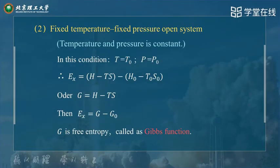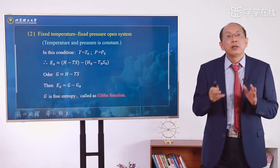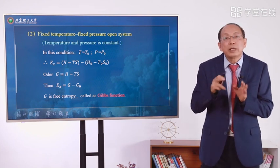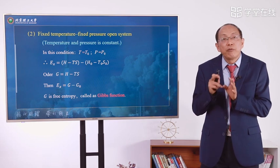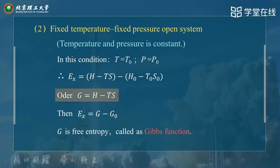From the last page, we can calculate the exergy as H minus TS minus (H0 minus T0·S0). The first term has no zero subscript, and every parameter in the last term has a zero subscript. So we define G equals H minus TS.